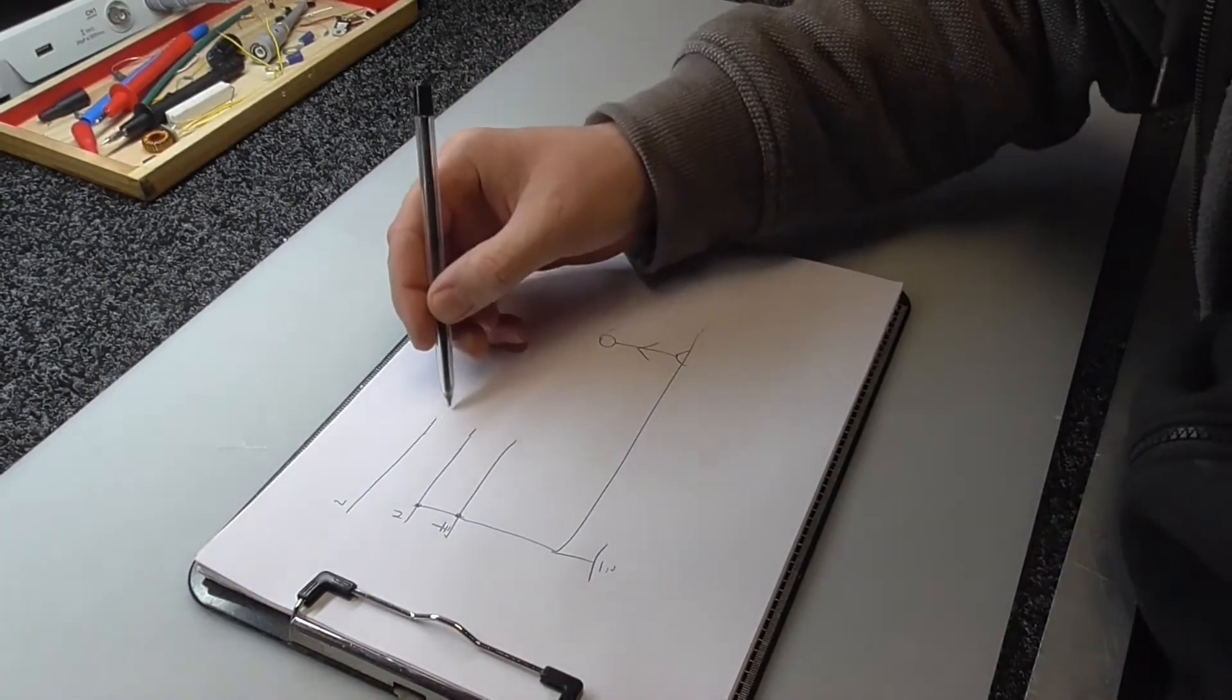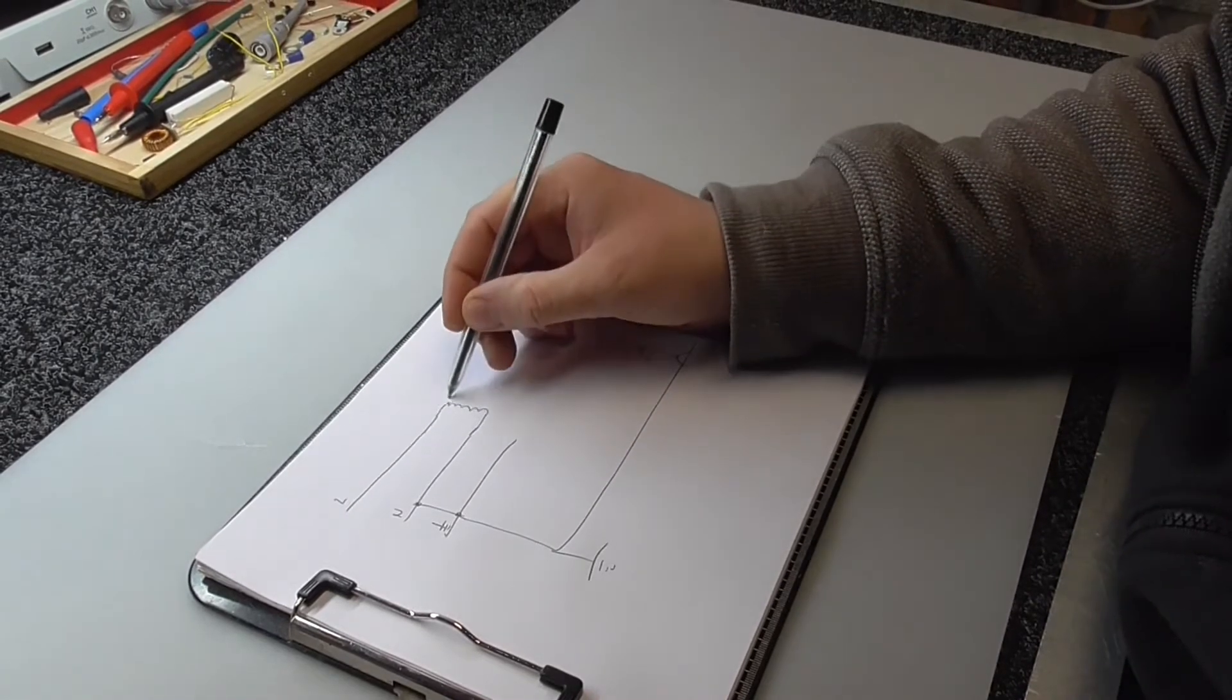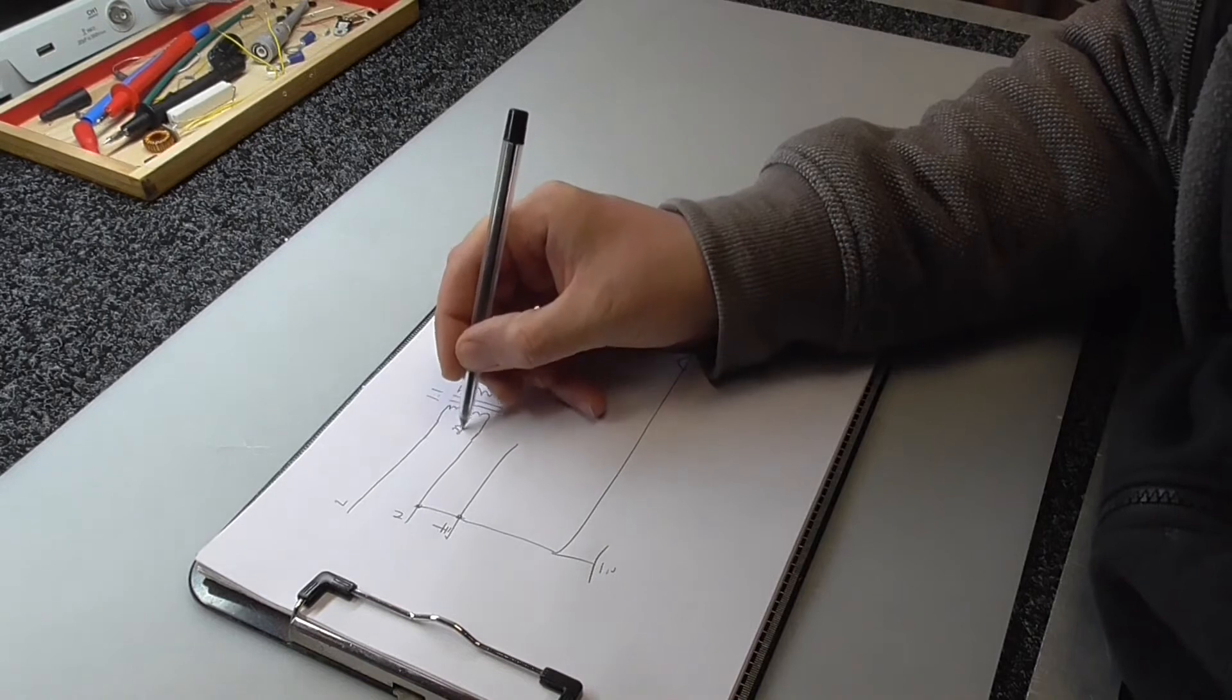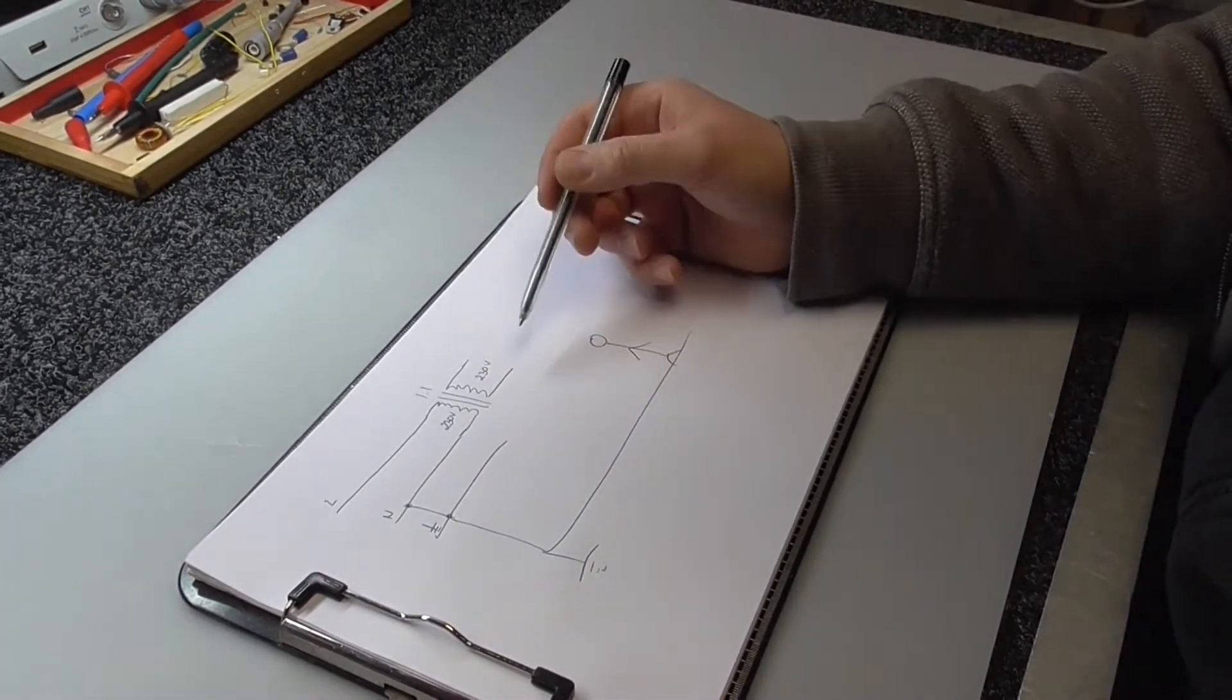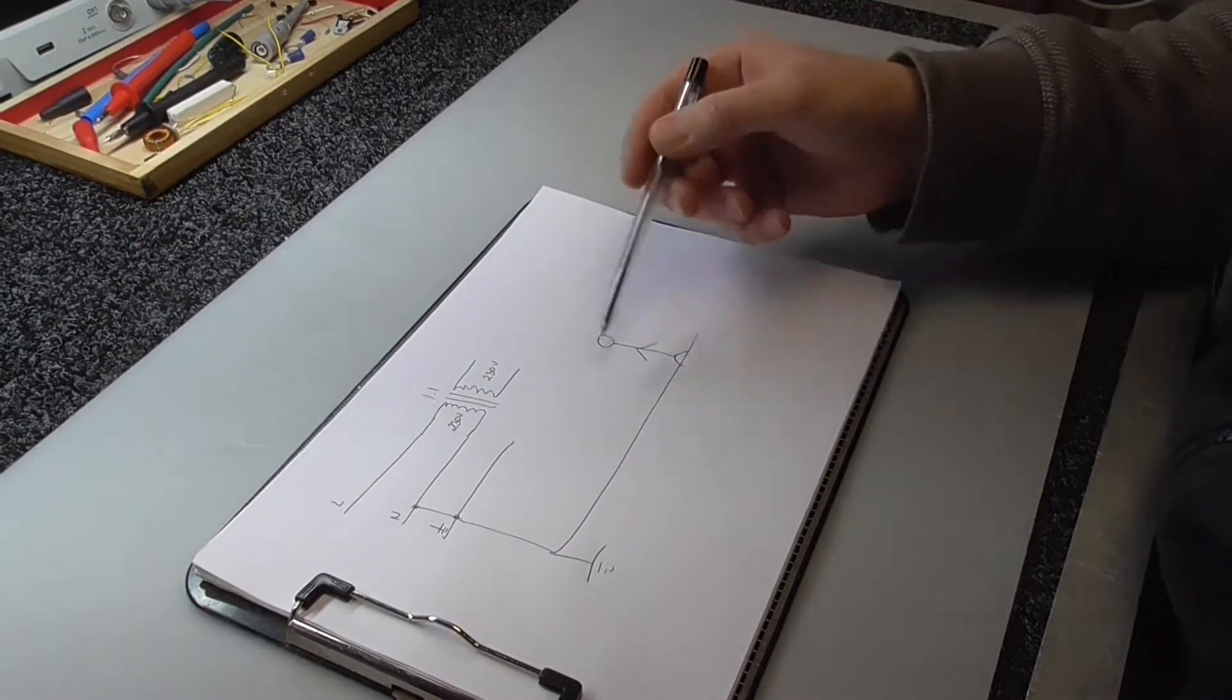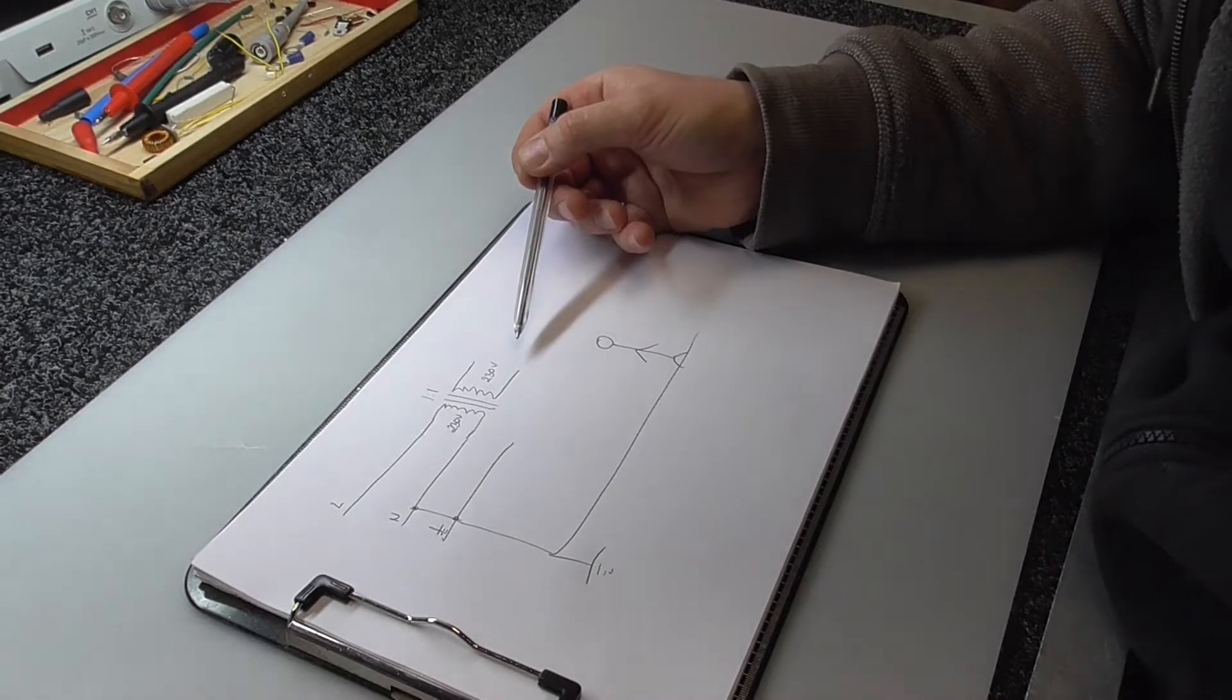The idea of the isolating transformer is to put a transformer in with a ratio of one to one, so we will have 230 volts on the primary side and 230 volts on the secondary side. But we are actually isolated by this transformer from the mains. So we are still grounded, but we are not one of the potentials for this voltage on the secondary side. If we touch one of the wires, we will not get electric shock.